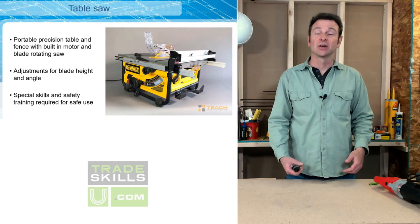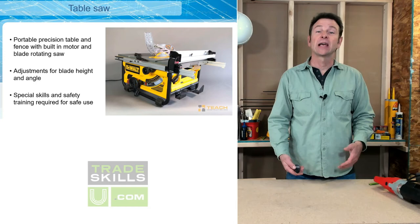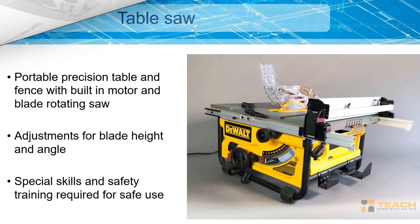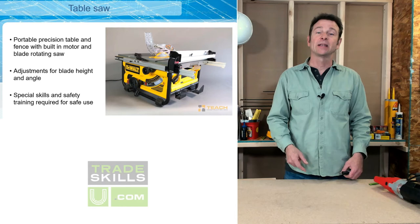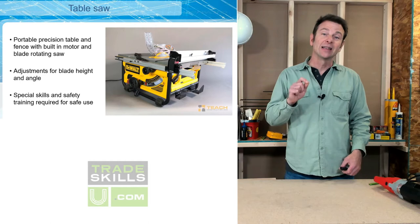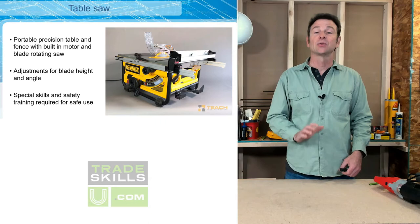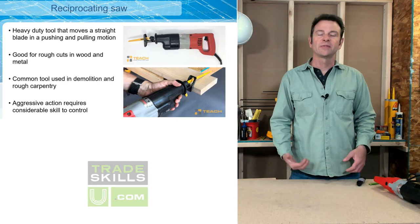Another power tool you might find on the job site is a table saw. This is a much larger, stationary power tool. It has a large table with a blade that comes up through it, precision settings for blade angle and height adjustment, and a fence that you run the material along. This is good for rip cuts or making repeated cuts in materials. Visit the link above to learn more — this saw requires a lot of skill and safety considerations. It is not a tool you jump into without experience.